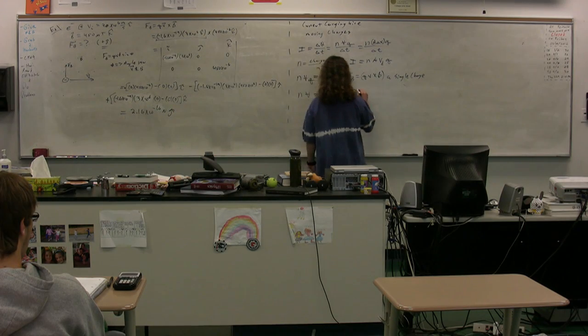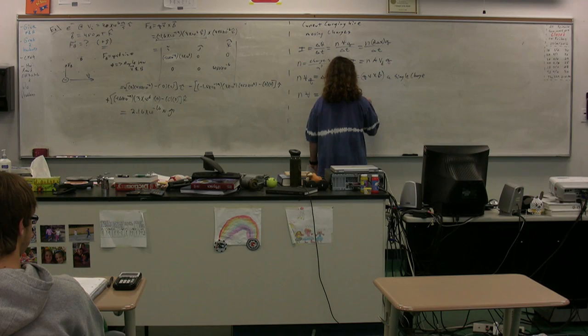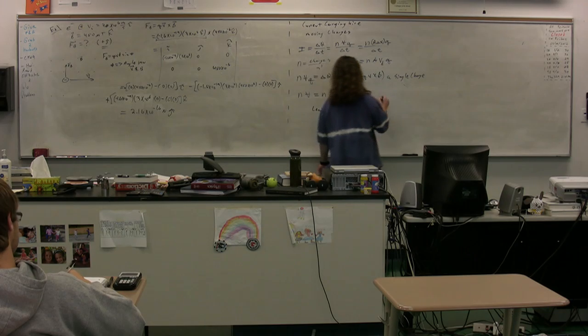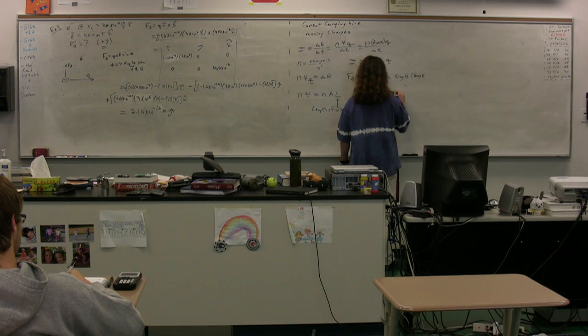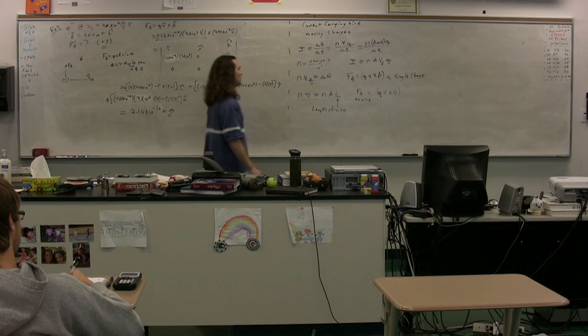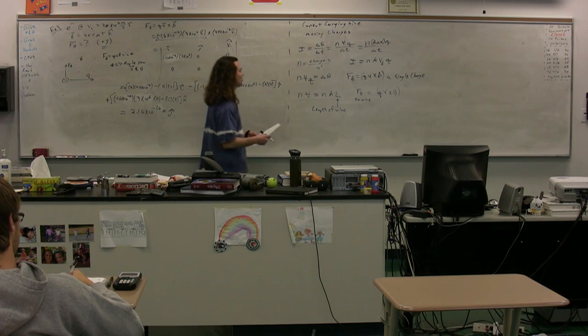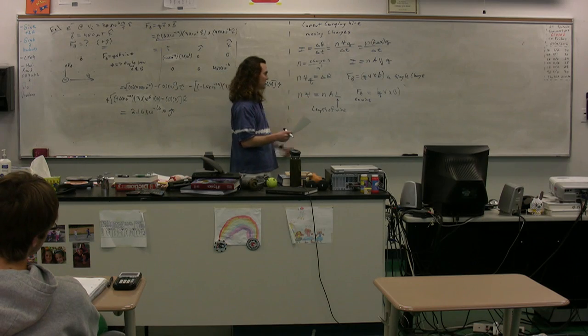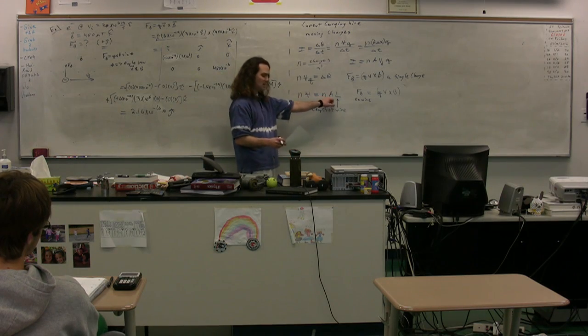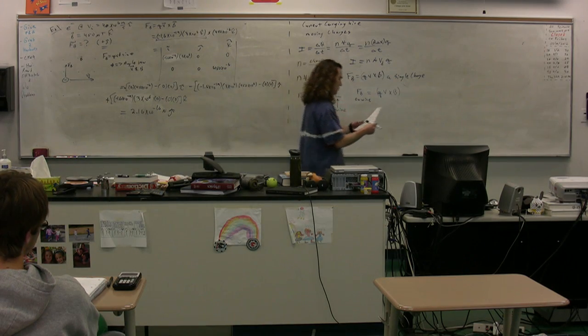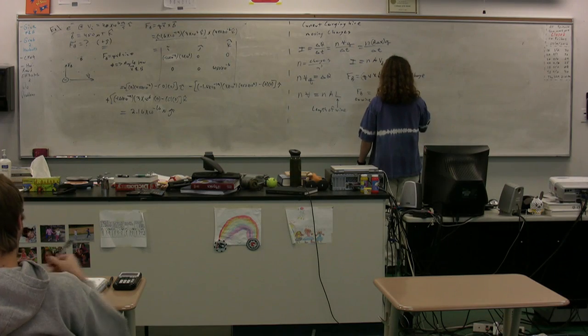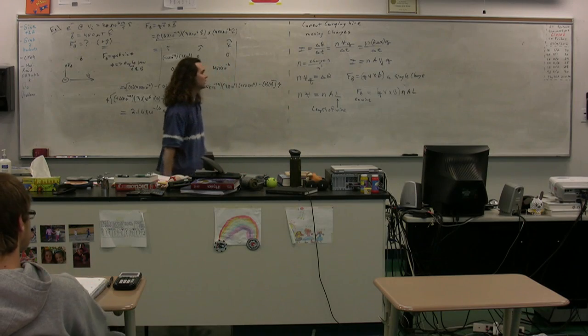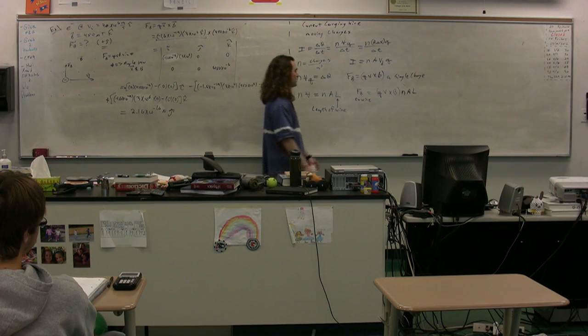So if we want the magnetic force on the wire, we're going to take and multiply a single charge, q v cross B, multiplied by the total number of charges on the wire, which is n times the charge carrier density times the volume, or the charge carrier density times the area times the length of the wire. So we multiply this through by n A times L, or the charge on the whole wire, rather than just a single charge.